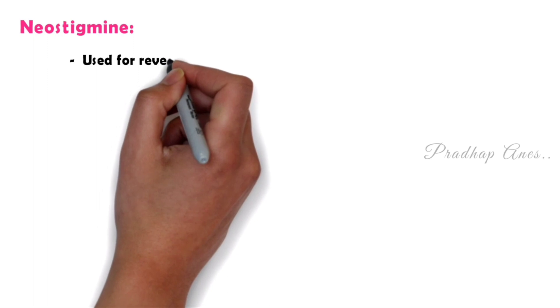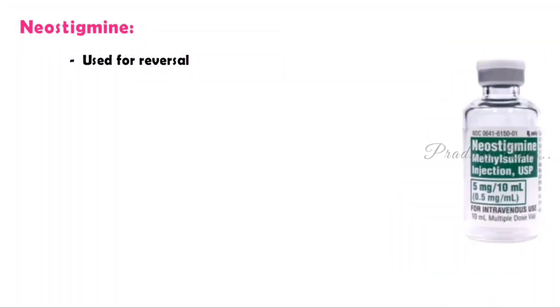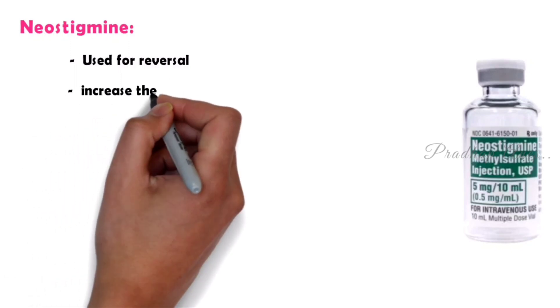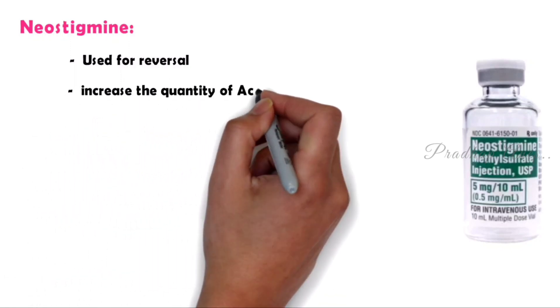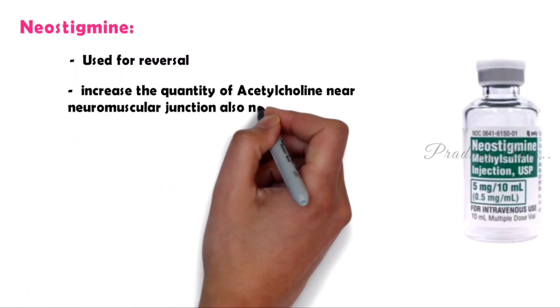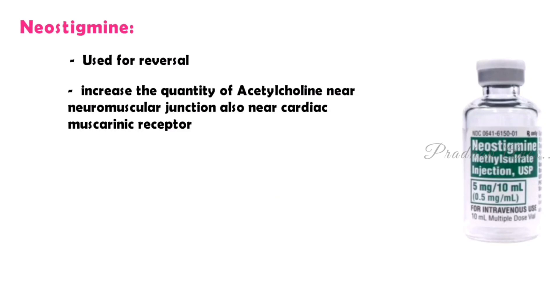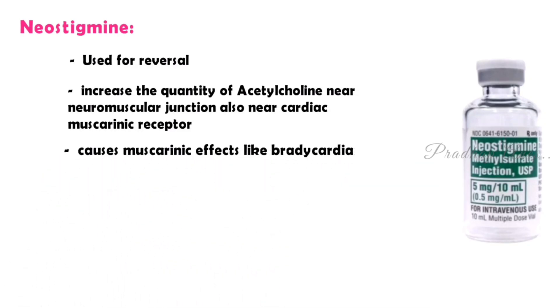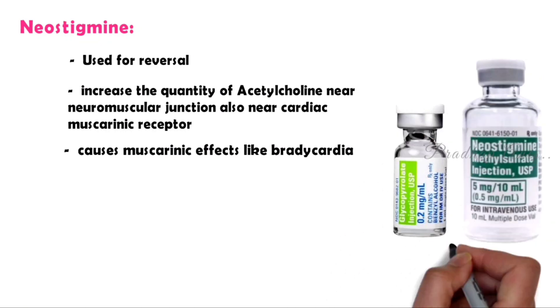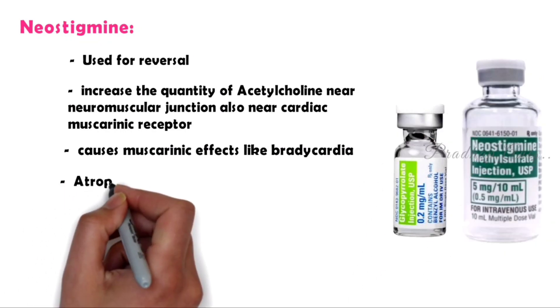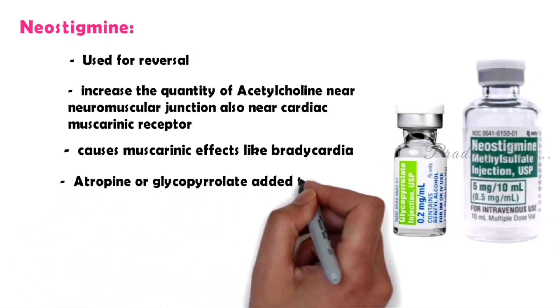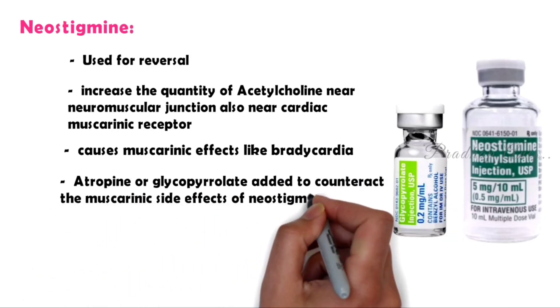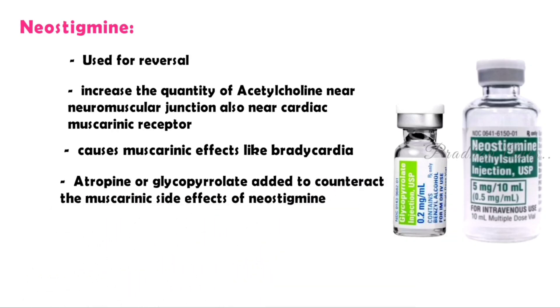Neostigmine is used for reversal. It cannot be given alone because it will increase the quantity of acetylcholine not only near the neuromuscular junction but also near cardiac muscarinic receptors. So it causes muscarinic effects like bradycardia. To avoid this muscarinic effect, it is mixed with atropine or glycopyrrolate, which are added to counteract the muscarinic side effects of neostigmine.